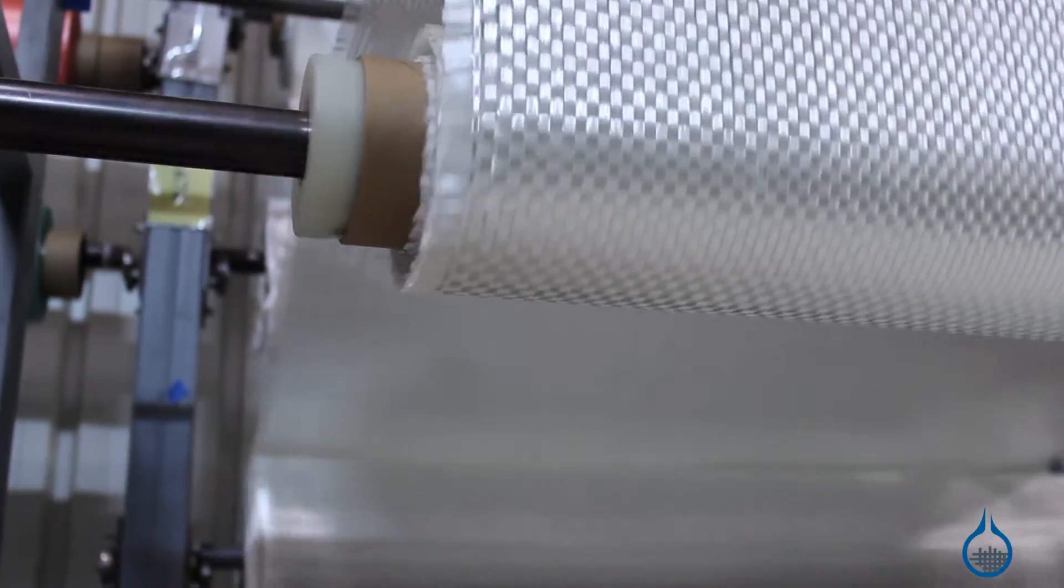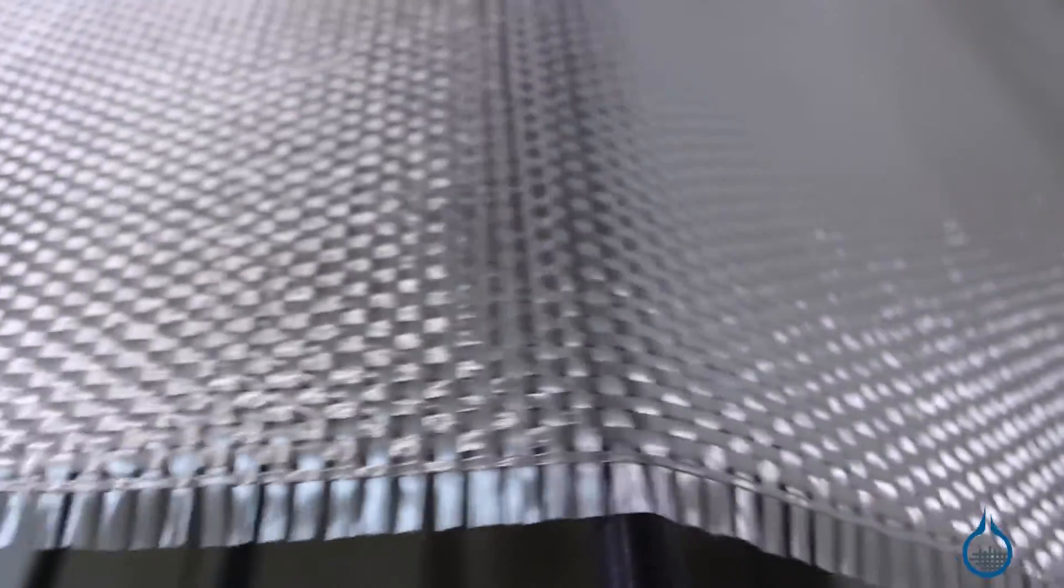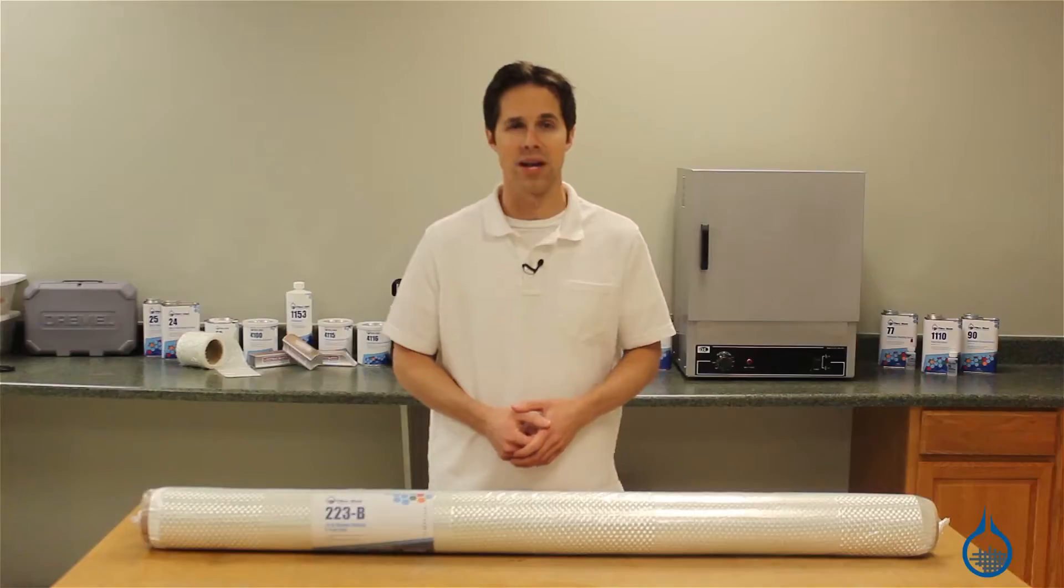Regardless of how it's used, woven roving and resin combined will produce a fiberglass composite with excellent strength, low weight, and great cosmetics.